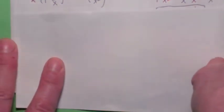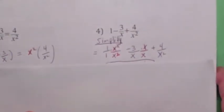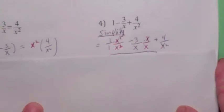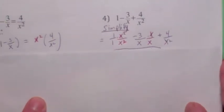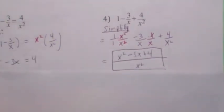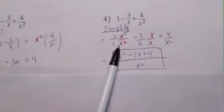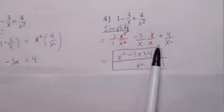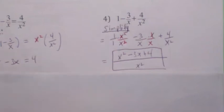Now with the expression, you can't get rid of the fractions. You have to, in fact, use the LCD as your common denominator, right? So your common denominator is going to be x squared. You multiply the first one by x squared over x squared, the second one by x over x. You end up with x squared minus 3x plus 4 over x squared. You're done — there's nothing more you can do to that.